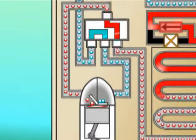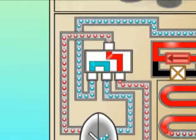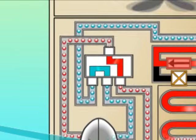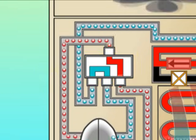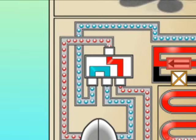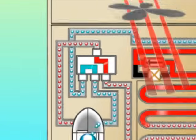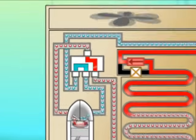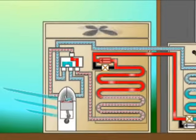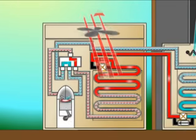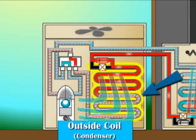This hot, high-pressure gas now travels through a routing valve known as the reversing valve to the outside coil, which functions as the condenser. In the condenser, the heat is removed from the refrigerant by the outdoor fan, causing the refrigerant to condense into a liquid.